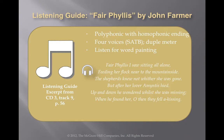Two examples of word painting exist in that piece. When the singer sang the first line, 'Fair Phyllis I saw sitting all alone,' that was sung by one soprano voice only — representing her sitting alone. The other example is 'up and down,' being sung in various registers, high and low, as the singers characterize Amentis searching up and down for his lover.